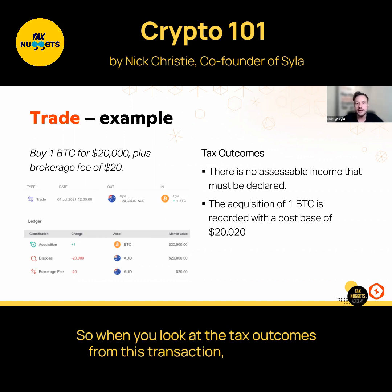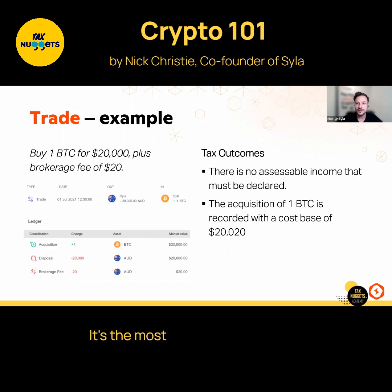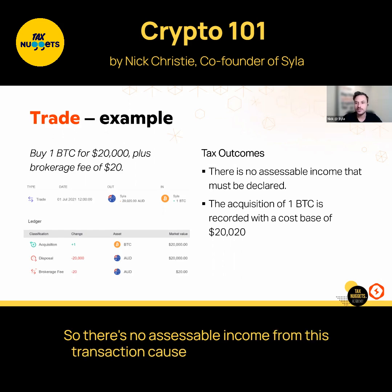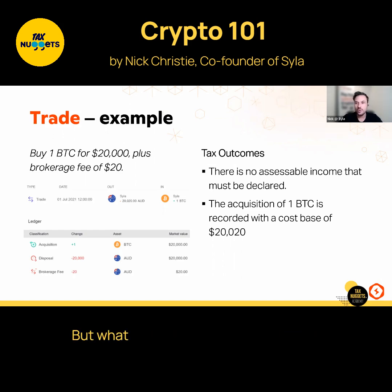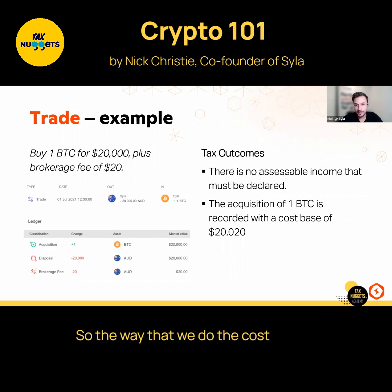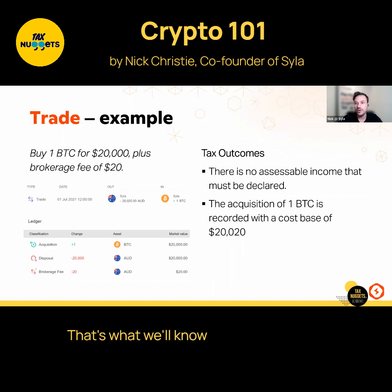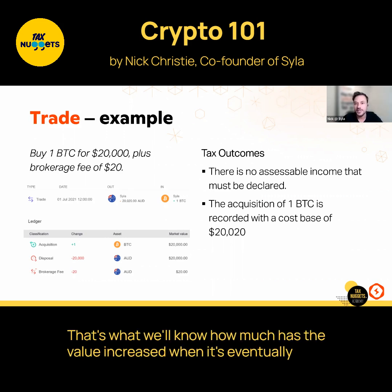When you look at the tax outcomes from this transaction, the most important thing is to record the cost base. There's no assessable income from a purchase, but we do need to record the cost base of this one unit of Bitcoin. We take the $20,000 paid plus the brokerage fee, giving us the total cost base — so we know how much the value has increased when it's eventually sold.